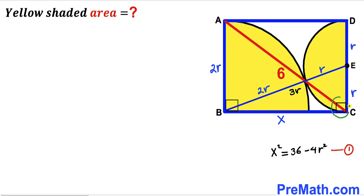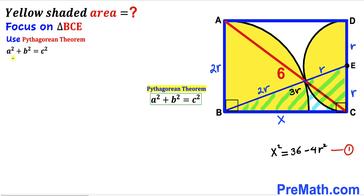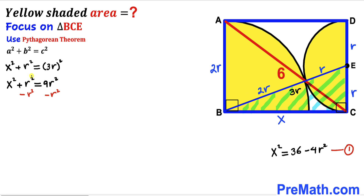The angle at C is 90 degrees since we are dealing with a rectangle. Let's focus on right triangle BCE and apply the Pythagorean theorem. Our hypotenuse is 3r, and the two other legs are x and r. Filling in the formula: x² + r² = (3r)². Subtracting r² from both sides, x² = 9r² − r² = 8r². I'll label this as equation number 2.